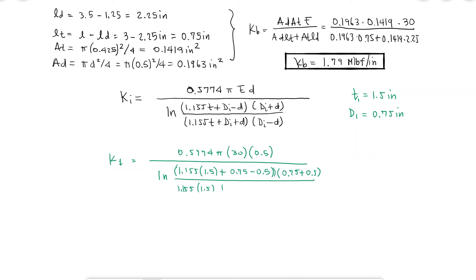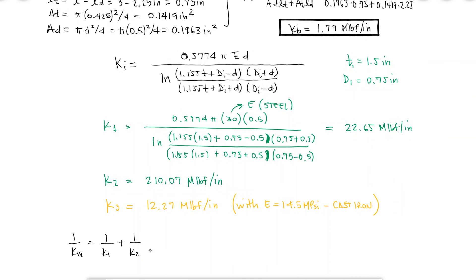Using the expression for the member stiffness and the values for k1, capital D1, and t1, and doing the same for the values of k2 and k3, I would be able to find the member stiffness for each section 1 to 3. And since we know how to add up stiffnesses in series, the final value for the member stiffness would be equal to 7.67 megapounds per inch.